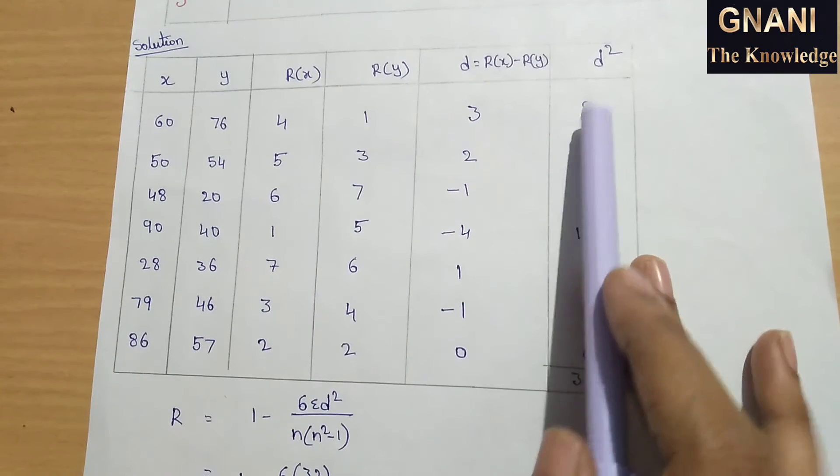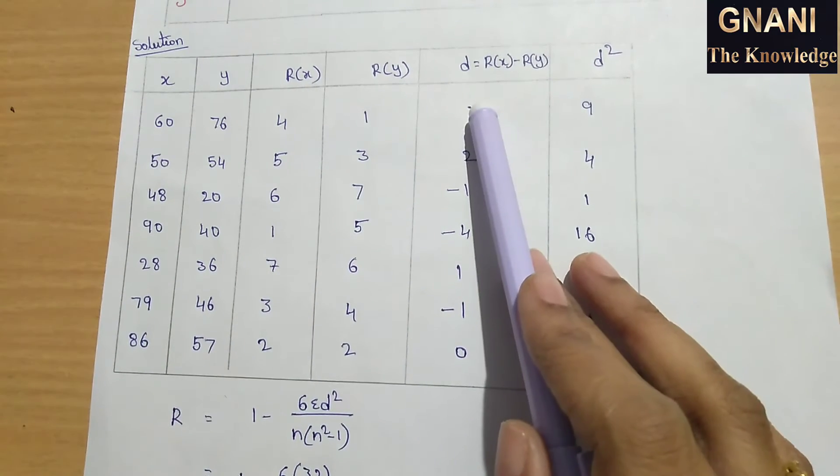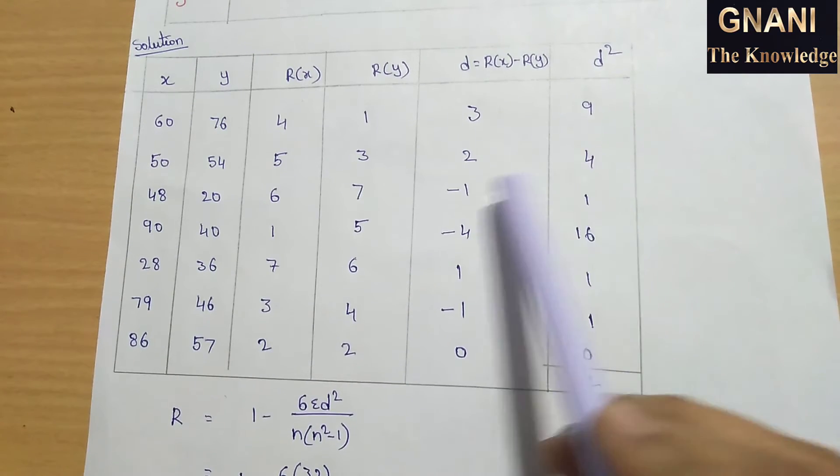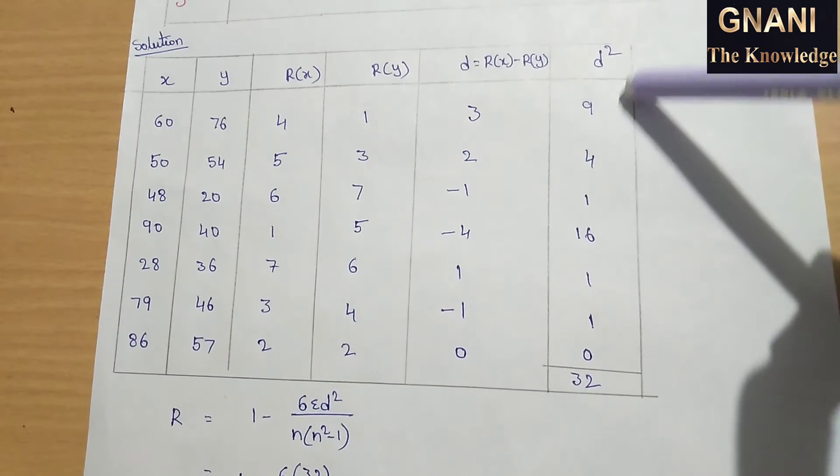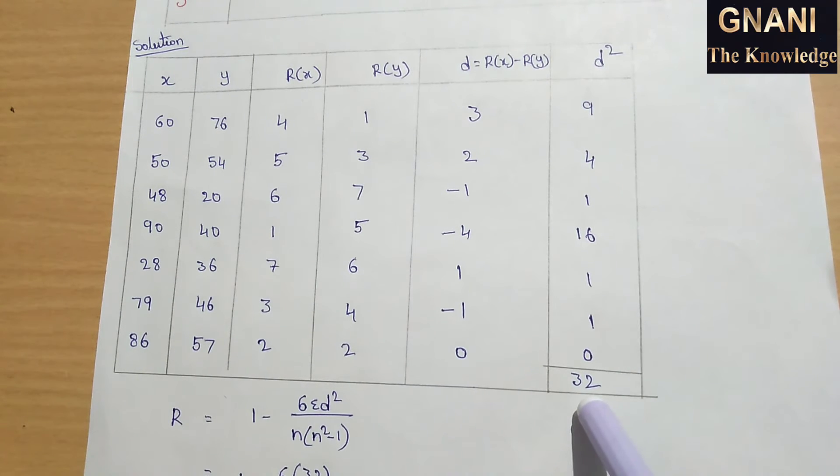Here we have the formula for summation d square. We calculate d square: 3 into 3 is 9, 2 into 2 is 4, 1 into 1 is 1, minus 4 into minus 4 is 16 (minus into minus is plus), 1 into 1 is 1, minus 1 into 1 is 1, 0 into 0 is 0. The total is 32, so summation d square is 32.